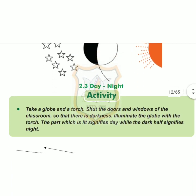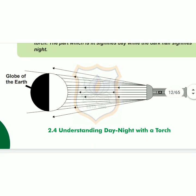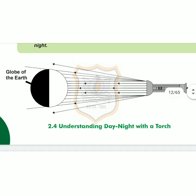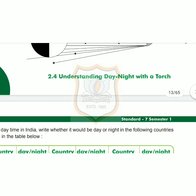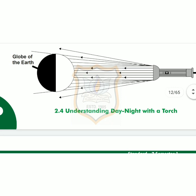Now children, see the picture on page 8 — understanding day and night with a torch. One activity is given. Take a globe and a torch. Shut the doors and windows of the classroom so that there is darkness. Illuminate the globe with the torch. The part which is lit signifies day while the dark half signifies night.